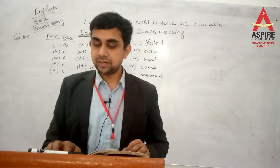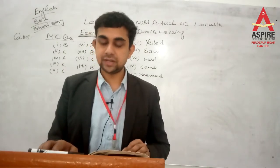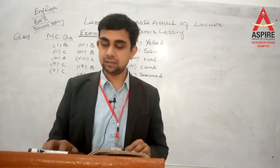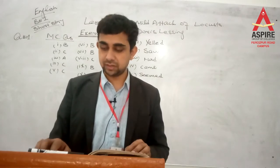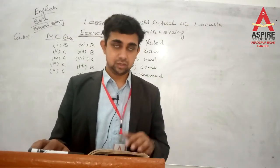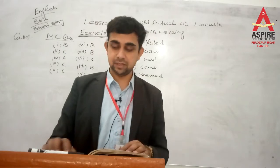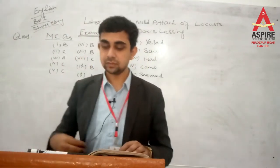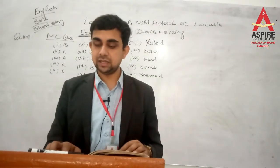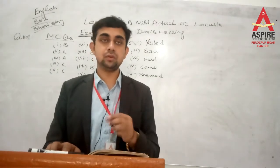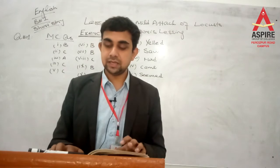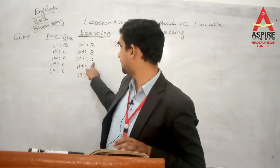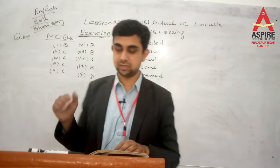Number 7: What did the farmers do at the time of attack? Option B is correct — they took precautionary measures to keep the locusts away — انہوں نے احتیاطی تدابیر اپنائیں. Number 8: Locust attacked in the area of — the answer is C: 50 miles. So number 8's correct answer is C.